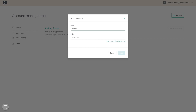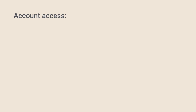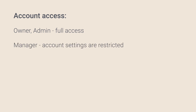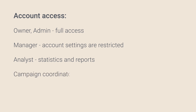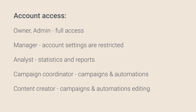To add a new user, enter their email address and select the desired user role. The selected role dictates what parts of the account the user can access. The owner and admins have full account access, except admins don't receive important account notifications and their access can be changed or revoked. Managers have access to all core features but cannot export contacts or access account-related information or other users. Analysts have access to statistics and reporting but cannot set up campaigns or automations. Campaign coordinators have access to campaigns, automations, and segmentation, but cannot see or export contacts. Content creators can edit campaigns and automations but cannot send any themselves.